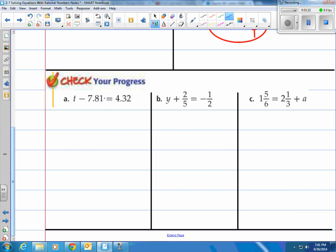Step one, draw your train tracks. Step two, inverse operation to get t by itself. You add 7.81. This would cancel out to zero. So t is equal to whatever this problem is right here. So we have 2 plus 1 is 3. 3 plus 8 is 11, carry the 1 over there. 4 plus 7 is 11 plus 1 is 12. So we have 12.13. Go ahead and check that on a calculator for yourself and it does check.